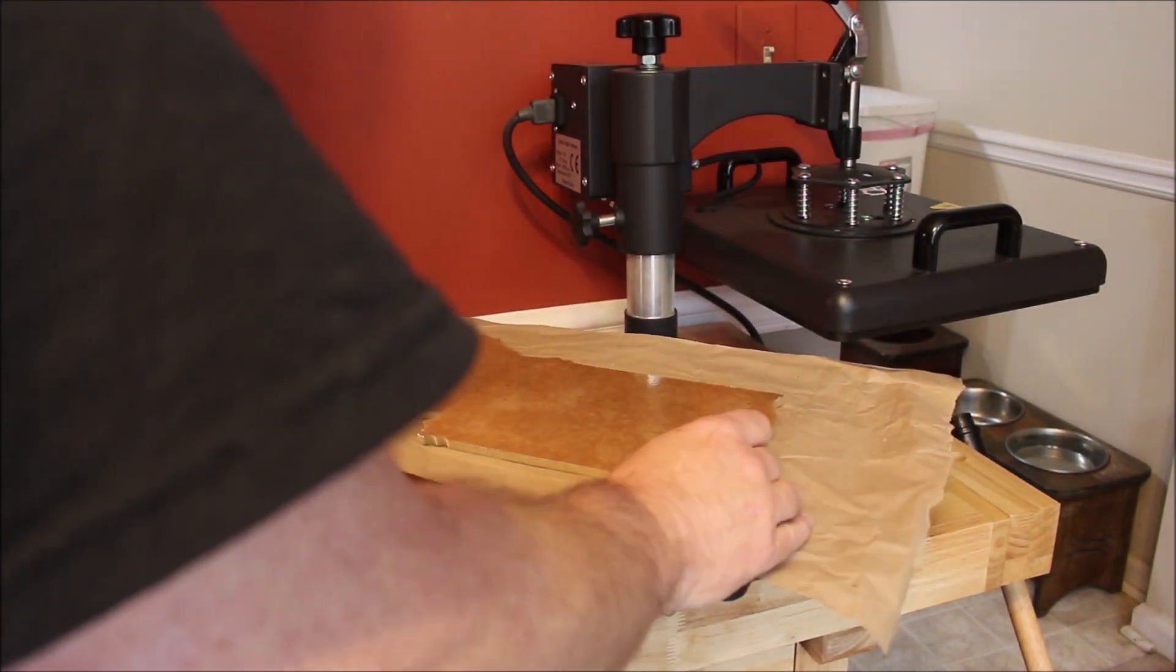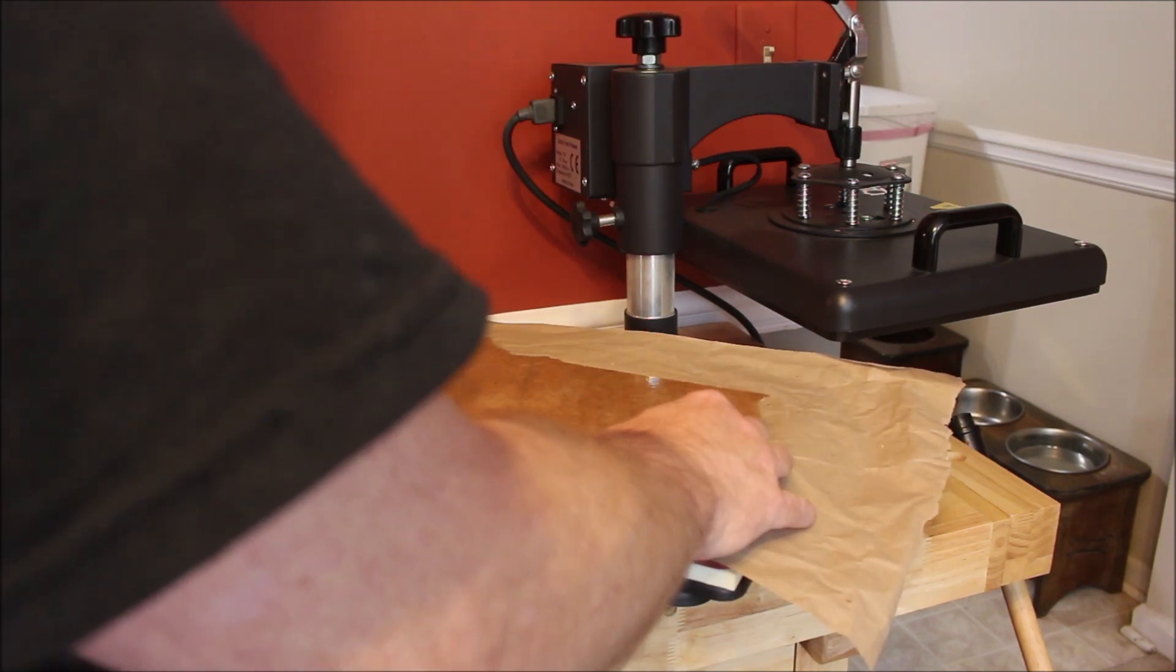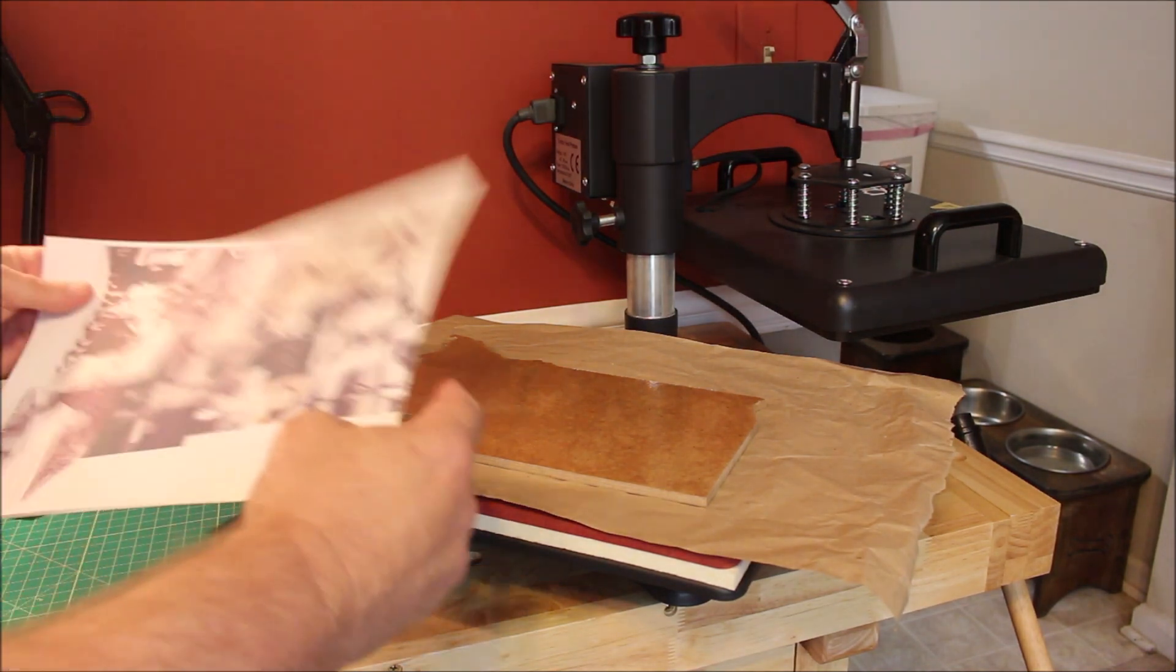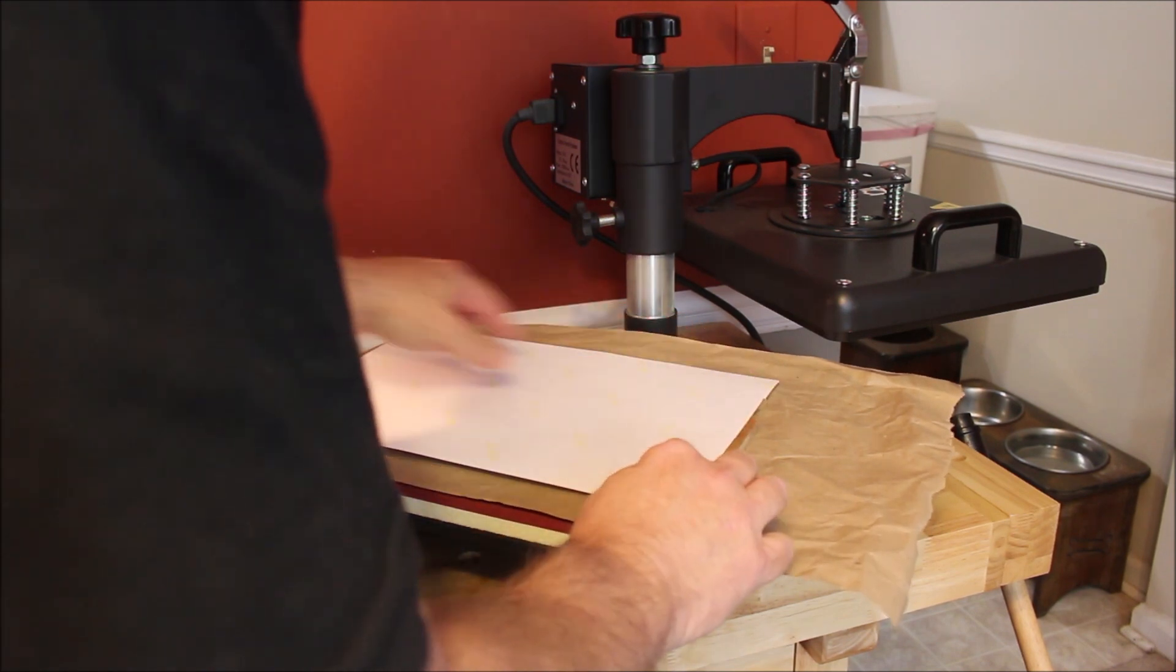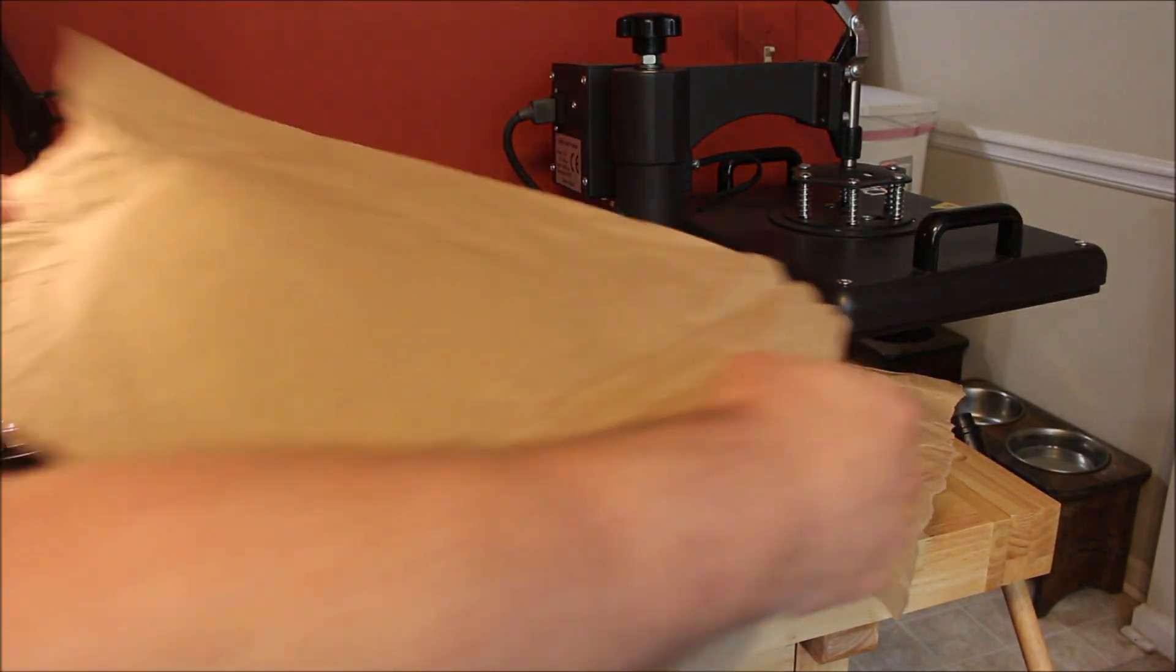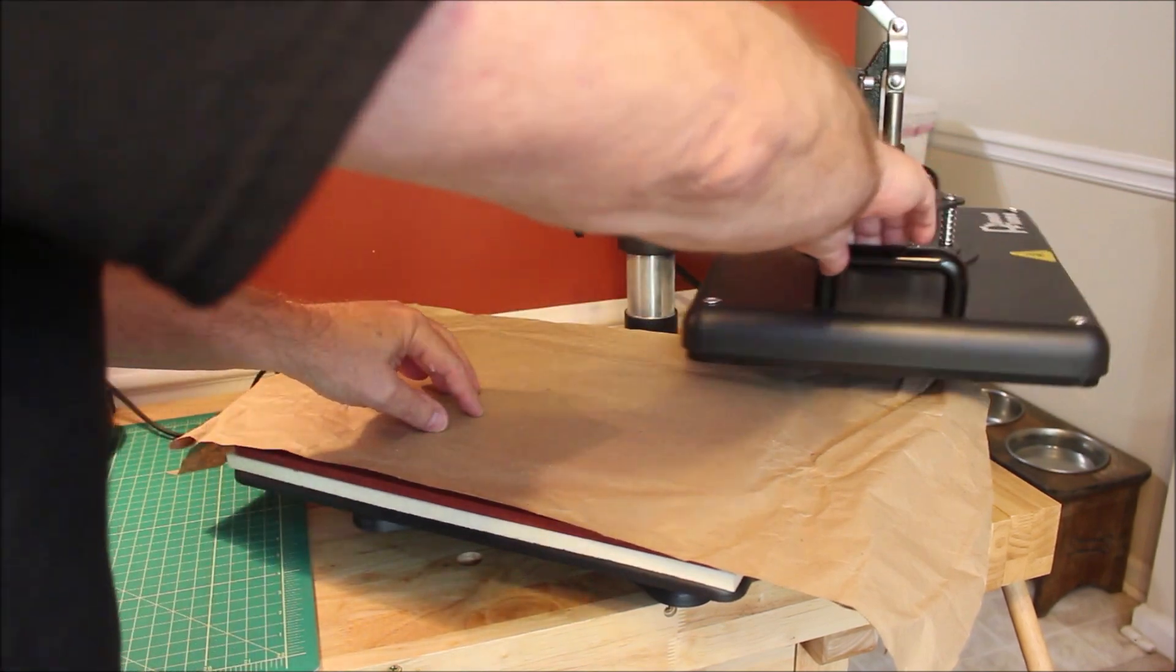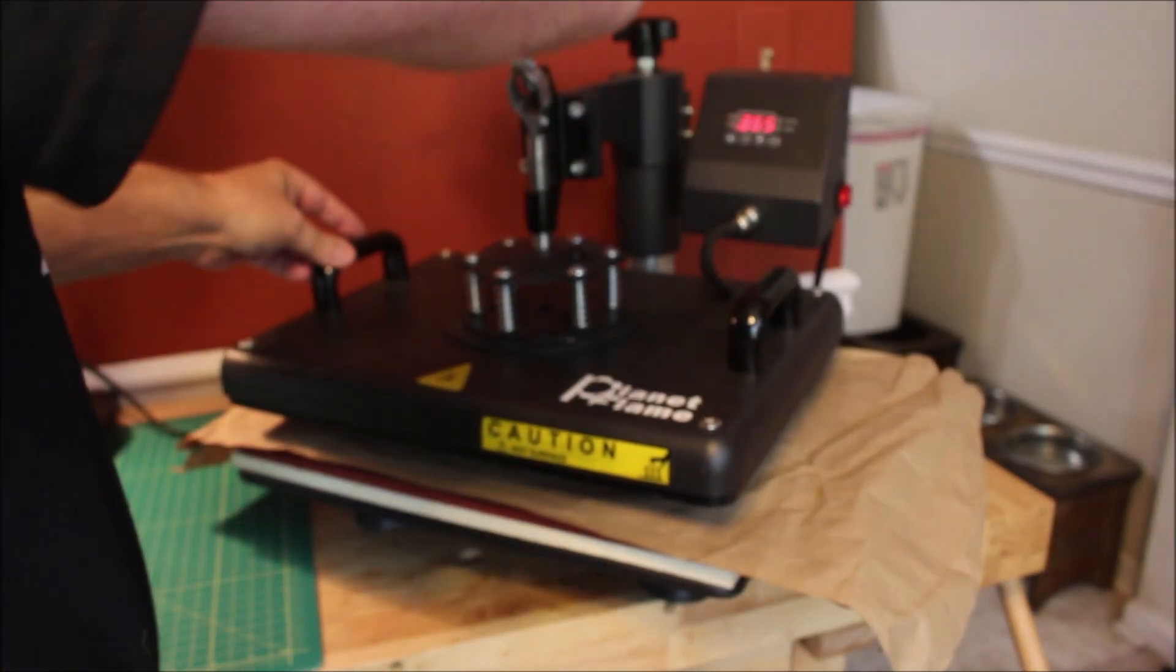After letting it cool down a little bit, it's back to the heat press. Again, brown paper on the bottom. Then turn the photograph on the sublimation paper face down. And I actually used my scissors and cut a couple of things to help me get it lined up. And then some more brown paper on top. And swing the heat press around and we're good to go for another 90 seconds.